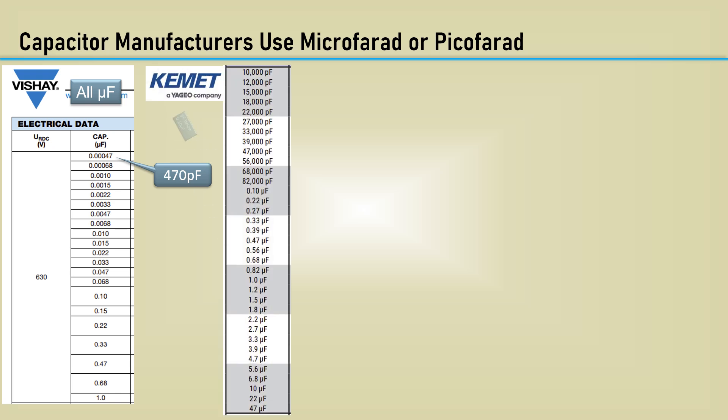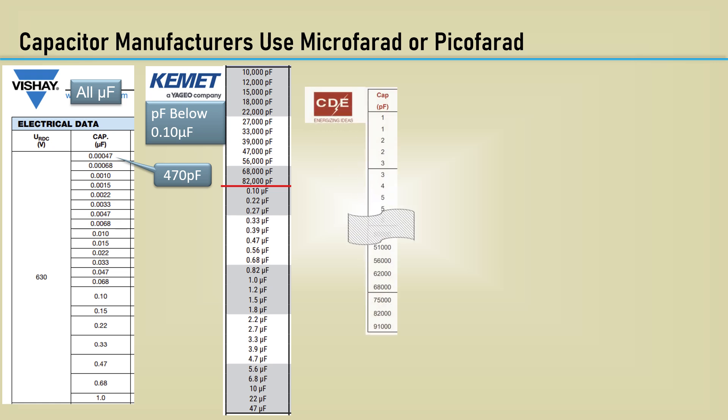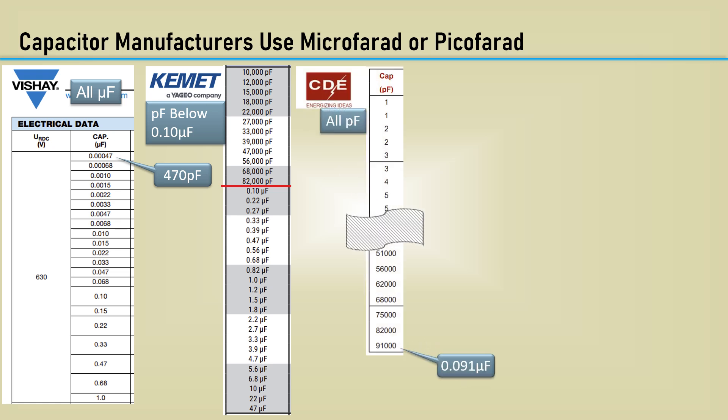Here's a Kemet data sheet. The values are picofarad below .1 microfarad. A CDE data sheet uses all picofarads,